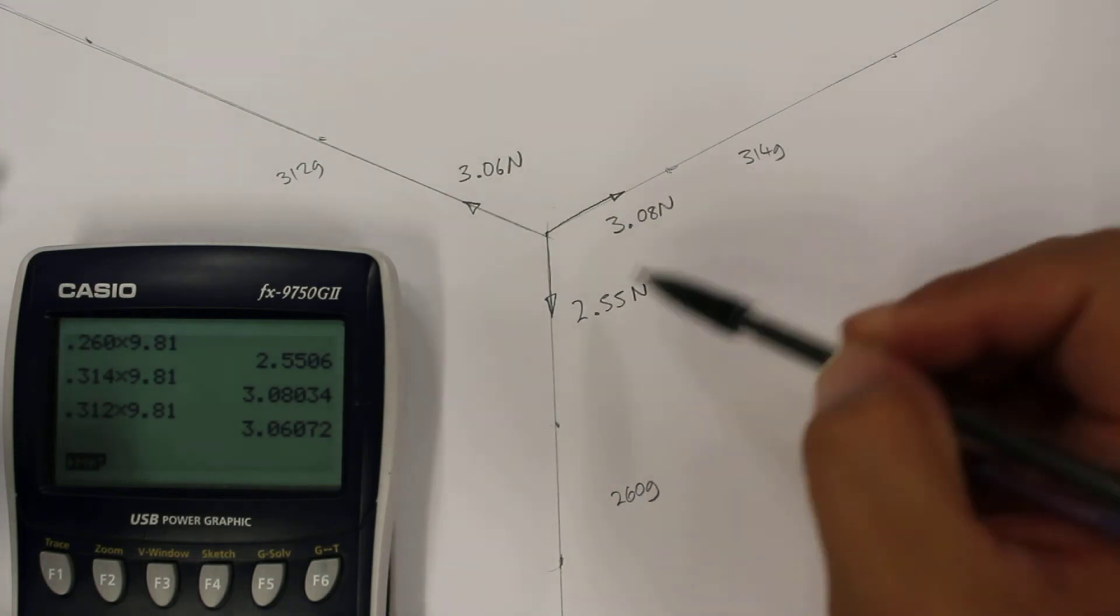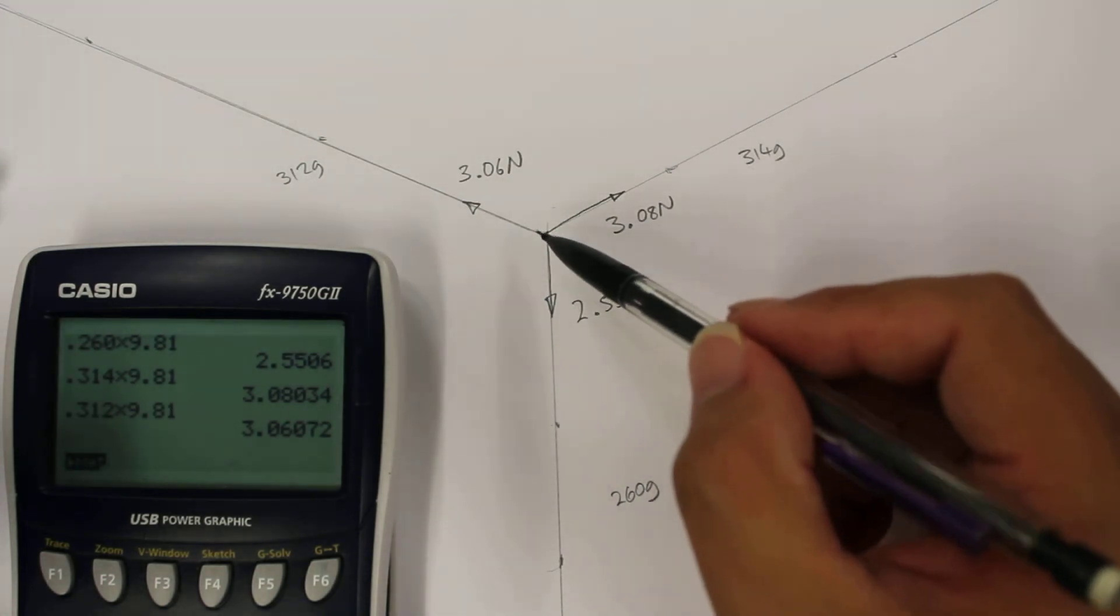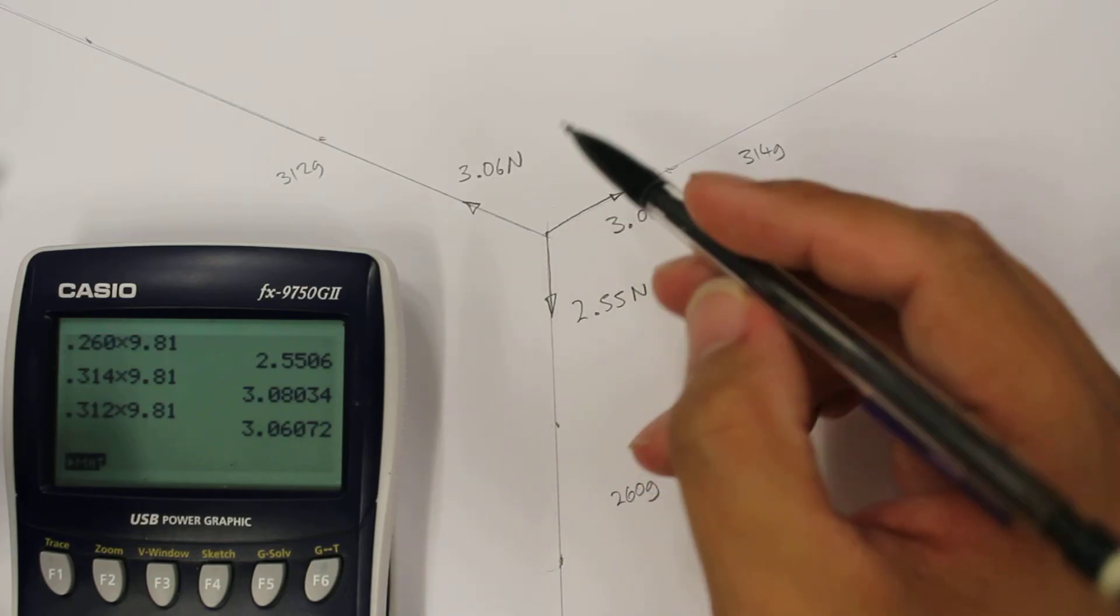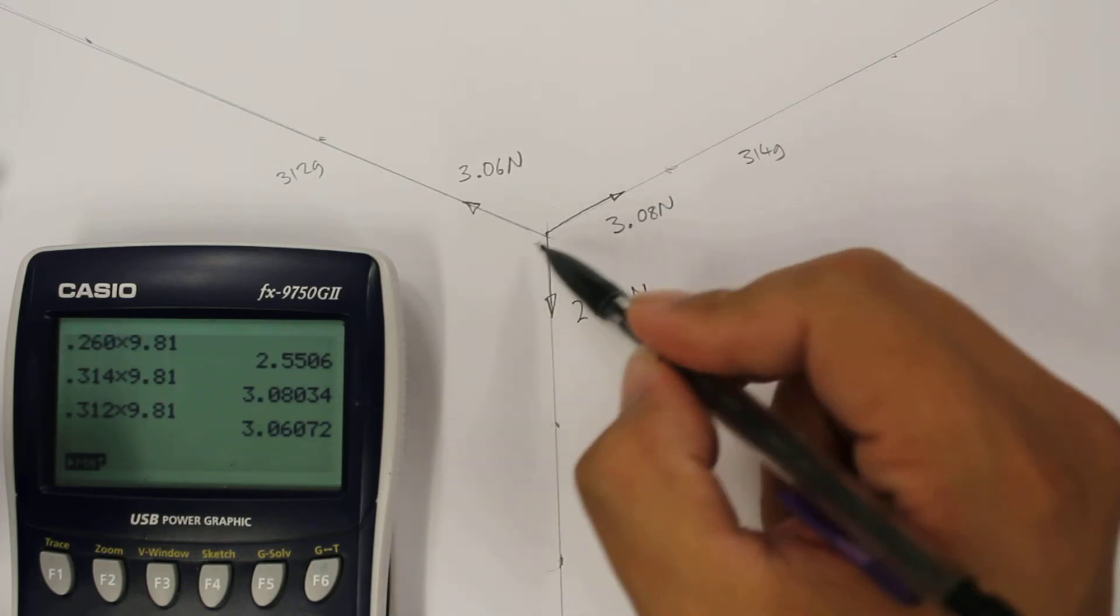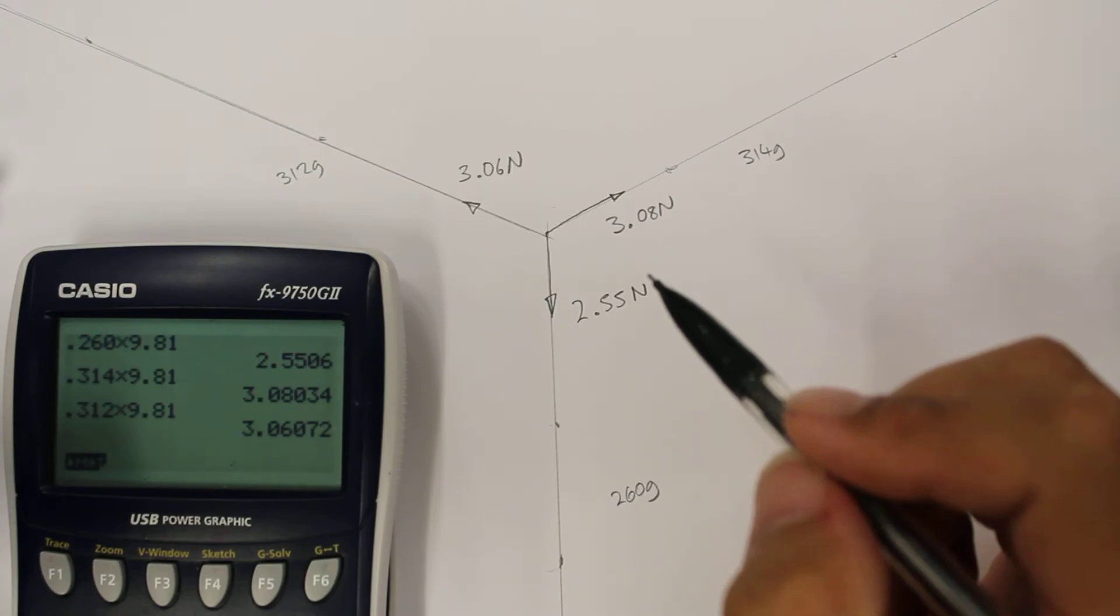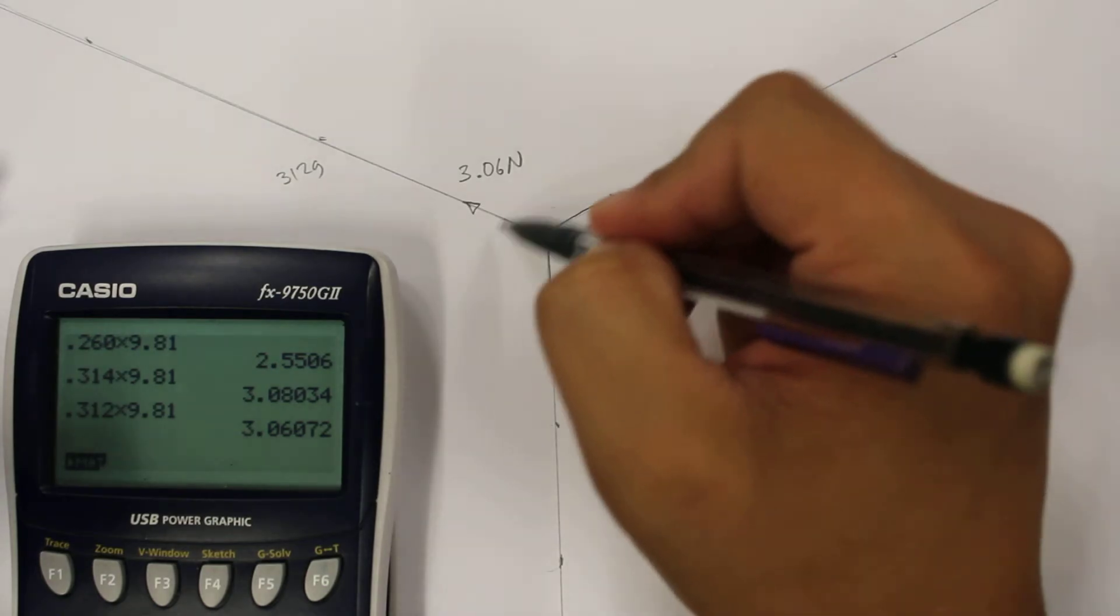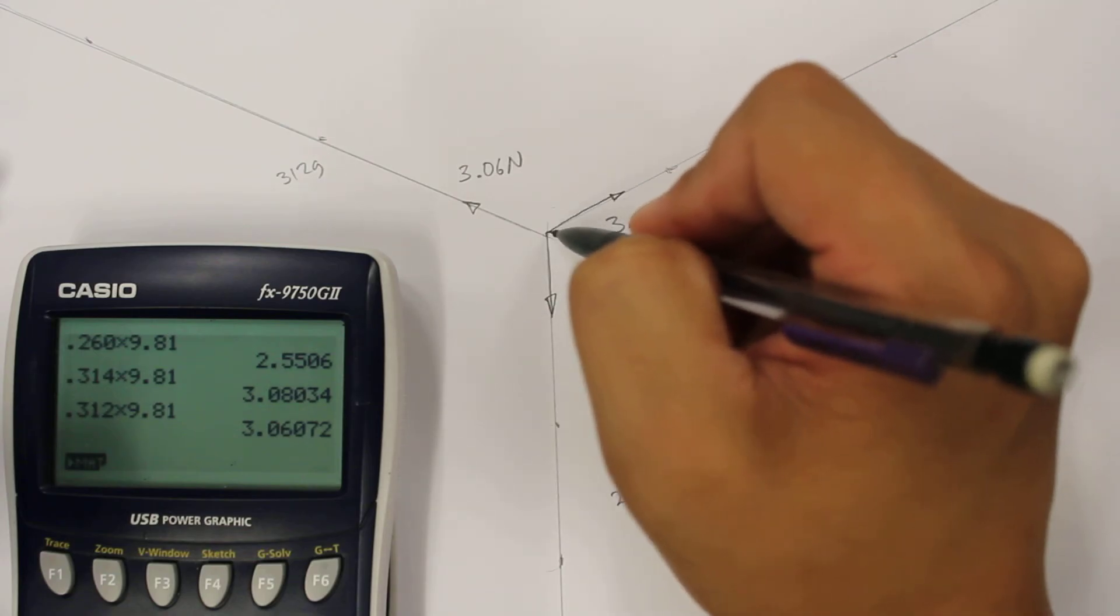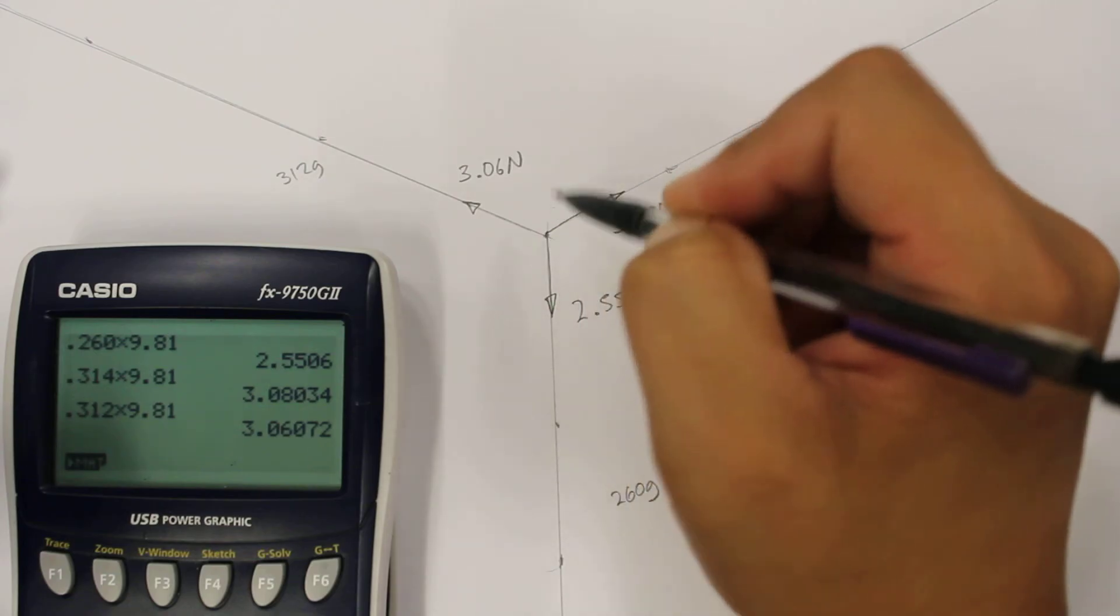Okay so this system here is what we call a free body diagram and we've replaced the body with a single point and we see the forces that are acting on that body. We could also draw the hoop that was here but I'll just be representing this as a single point.